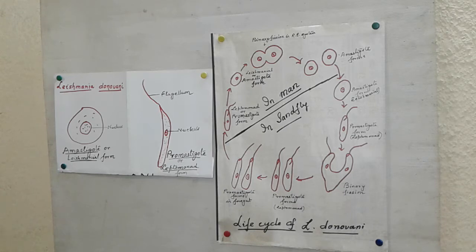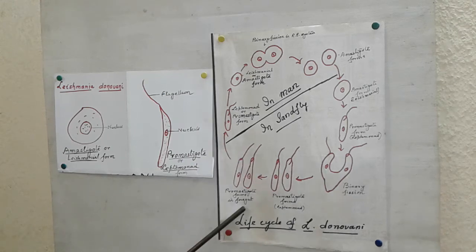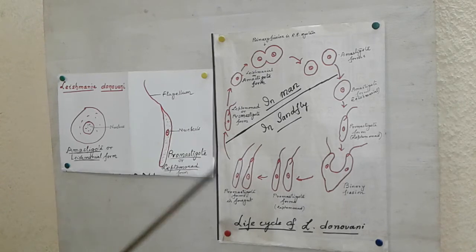The leptomonad or promastigot forms are the infected stages. Now if this sand fly bites a healthy person, the promastigot or leptomonad form enters his body.